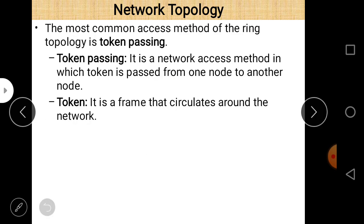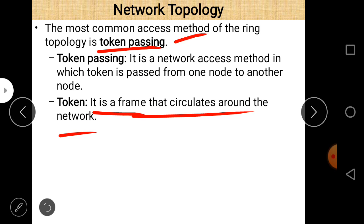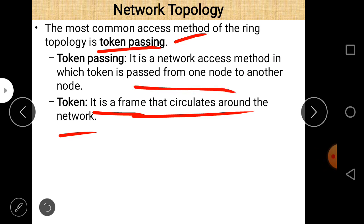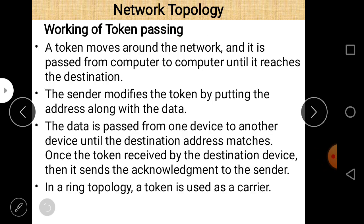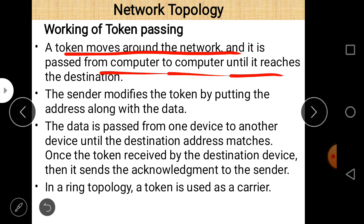The most common access method for ring topology is token passing — not broadcast. A token is a frame that circulates around the network. Token passing is a network access method in which the token is passed from one node to another. Data is sent to a particular node rather than broadcast. A token moves around the network, passed from computer to computer until it reaches the destination.